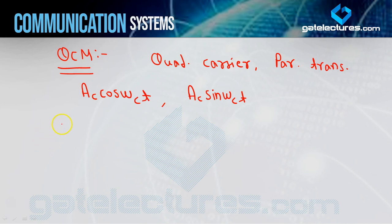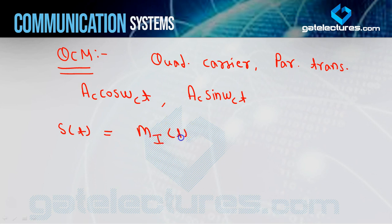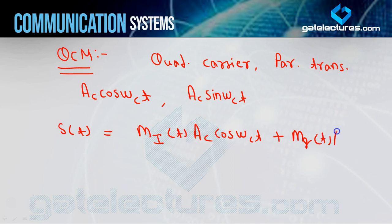Ab agar main yahan par iska equation likhun, to yeh ho jayega: s(t) = m_i(t)·Ac·cos(ωct) + m_q(t)·Ac·sin(ωct). Yahan par jo aapka m_i(t) hai, wo message signal hai — in-phase component of message signal hai. Aur m_q(t) kya hai — aapka quadrature phase component of message signal hai.